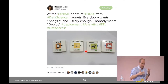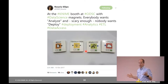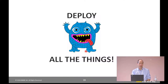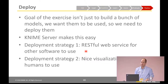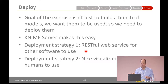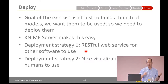I remembered this tweet from Rosaria talking about deployment. I built a bunch of models and I need to get them out there so we can actually use them. So in addition to doing the automation of the modeling, we need to actually deploy all of those models. The goal of the exercise wasn't just to build the models — we need to deploy them. We're going to do that with the server. We'll do two different deployment strategies: one for machines, where we deploy the models as a web service, and one for people, where we deploy the models with a nice visualization.